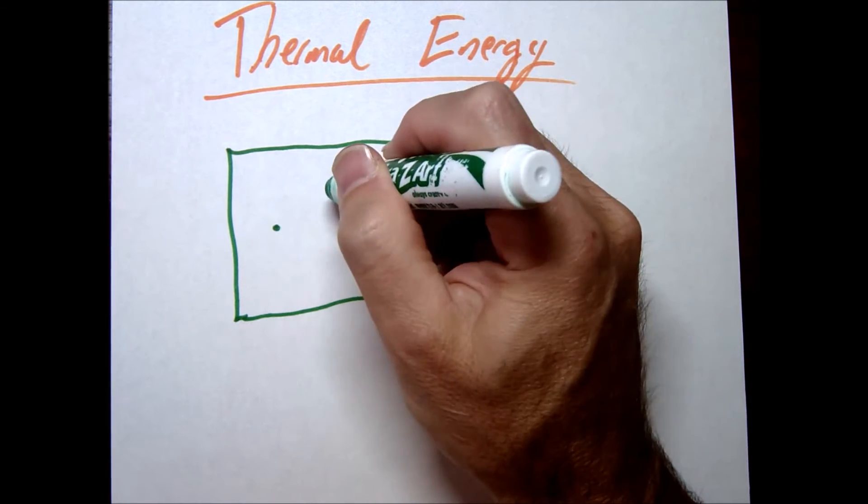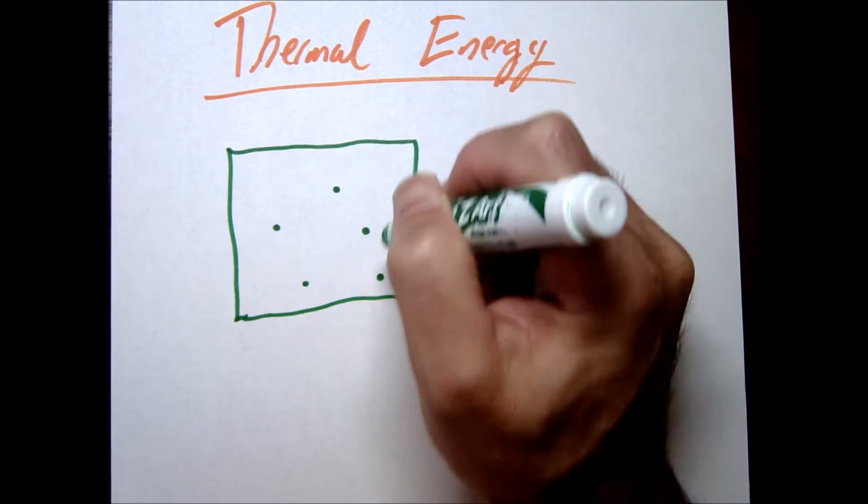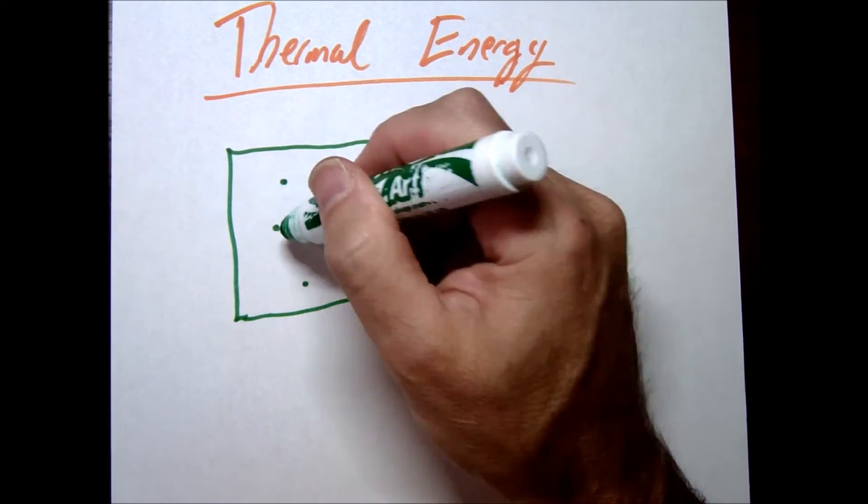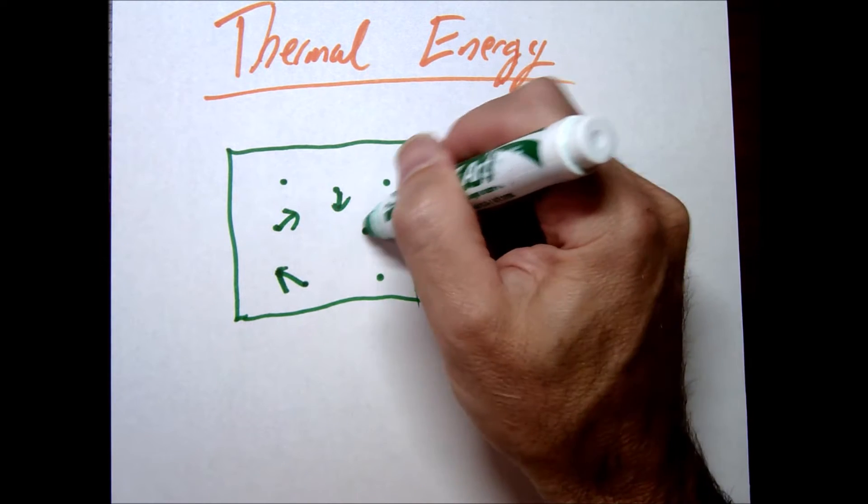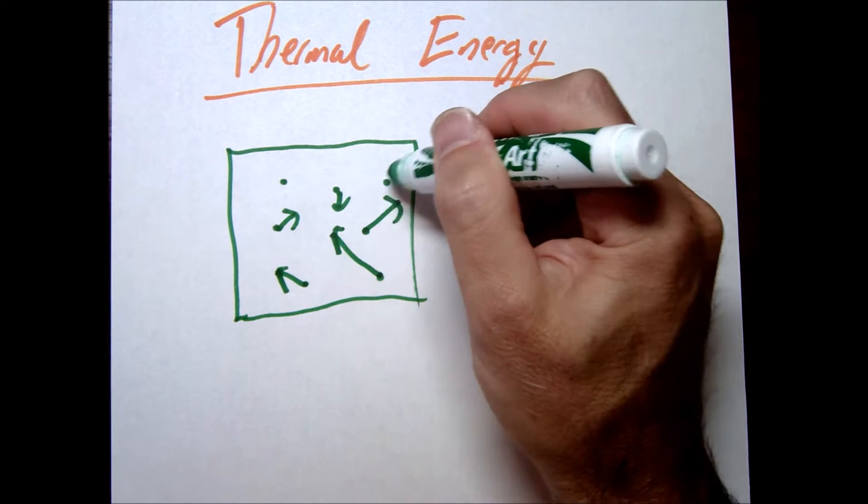So let's say for example we have a collection of atoms, and as you learned these atoms are in motion. Your atoms are going to be moving and typically the atoms are going to all be moving different speeds.